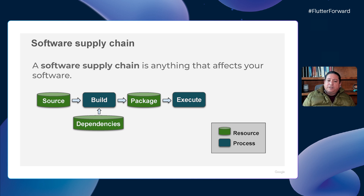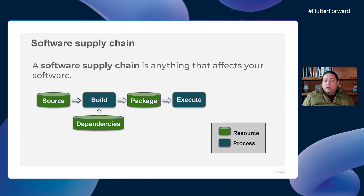Let's start with an informal definition. A software supply chain is anything that affects your software from development to execution. In this picture, we can see a common software supply chain. Its components are grouped into two different categories: resources, represented in green, and the processes acting on those resources, represented in blue. Common resources include the source code, third-party dependencies, and the artifacts generated from building the source code. Common processes include building the source code, archiving the packages, and the execution of applications by final users.